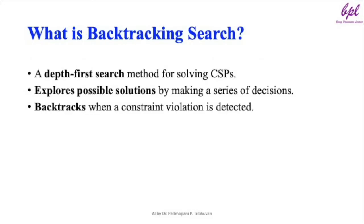What is backtracking search? Backtracking search is a depth-first search method. It systematically explores the possible values of each variable. If at any point the current assignment violates any constraints, the algorithm backtracks — or undoes its most recent assignment — and tries a new value for the variable. This process continues until either a solution is found or all possibilities are exhausted.